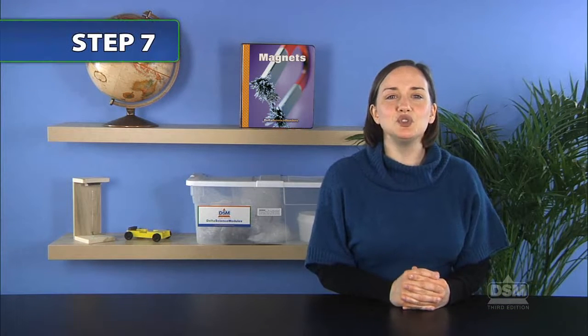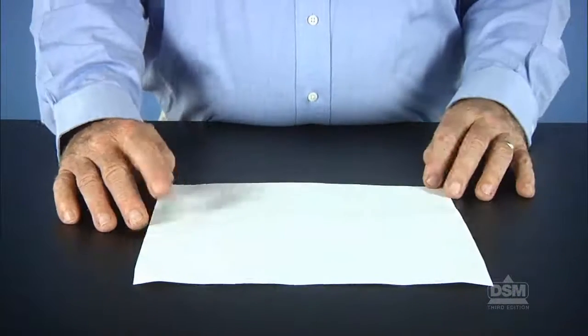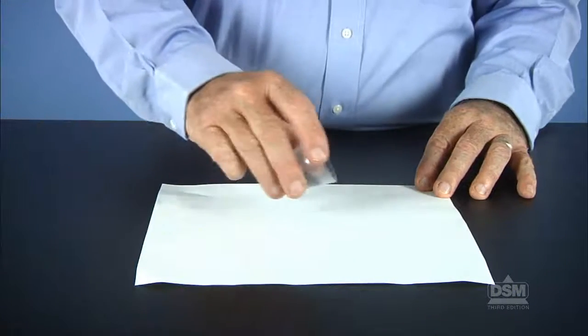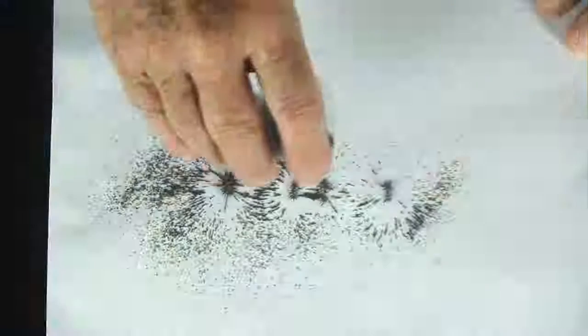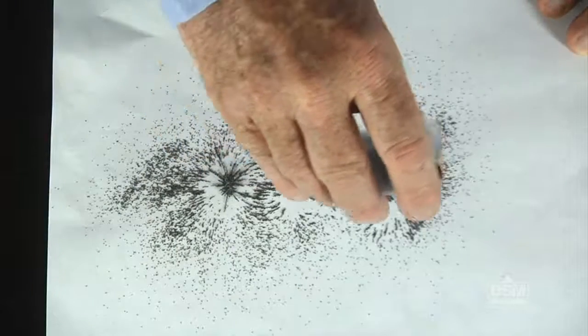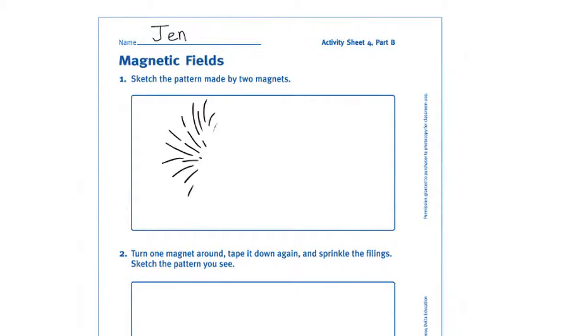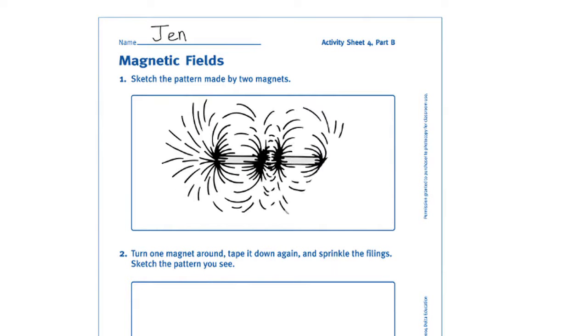Have the students position the two magnets, end to end, about one and a half centimeters apart, and tape them to the desktop. Cover the two magnets with a sheet of paper and sprinkle the iron filings as before. Have the students sketch the pattern that results at the top of Activity Sheet 4, Part B.